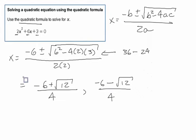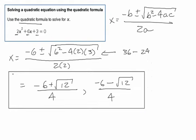And of course, this is an acceptable answer. We could leave it like this, or we could notice that the square root of 12 reduces to 2 radical 3. But that's fine either way.